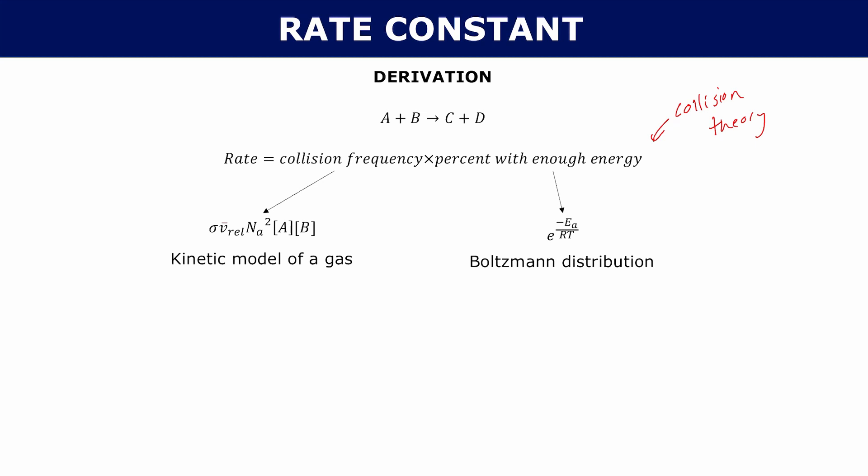The percentage of collisions with enough energy comes from the Boltzmann distribution, which tells you that the percentage of collisions with the right amount of energy is e to the minus Ea over RT. So putting it all together, the rate equals sigma times mean relative velocity times Avogadro's constant squared times the concentration of A and B, times e to the minus Ea over RT.